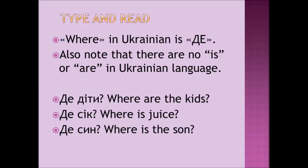The first one is the word 'where,' which in Ukrainian is 'де.' Also note that in Ukrainian there are no such words as 'is' or 'are,' and we actually get around without them. So try to type these phrases in Ukrainian, which include the alphabet of the previous five lessons.